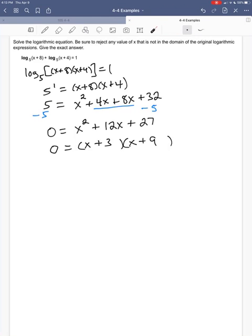And you might want to just check foil. x times x is x squared. x times 9, 3 times x gives me 9x and 3x, which is 12x. Positive 3 times positive 9 is positive 27. Now, I just look at this. 0 is equal to something times something. The only way that can happen is if one of the somethings is 0. So x plus 3 equals 0, or x plus 9 equals 0.